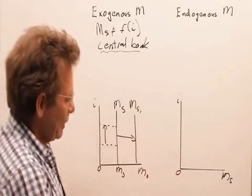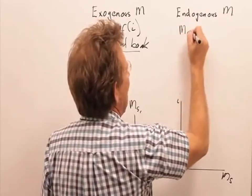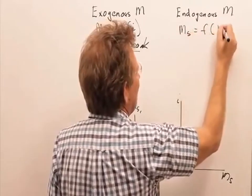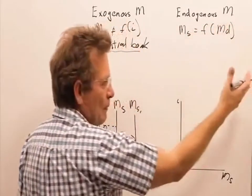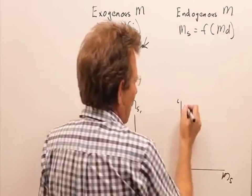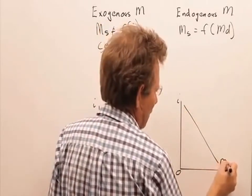Now, an endogenous money supply is what we are saying here is the money supply is a function of the demand for money. And you remember now, this is our money demand function.